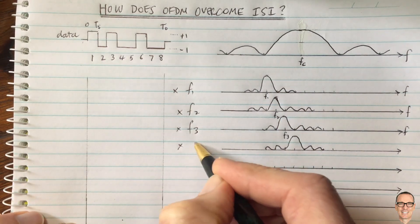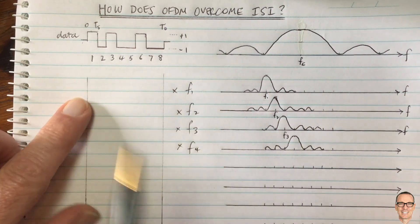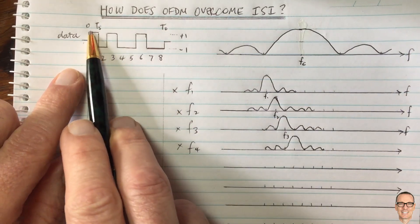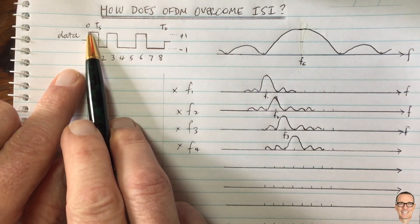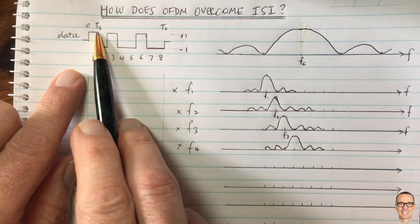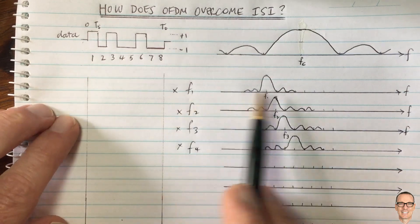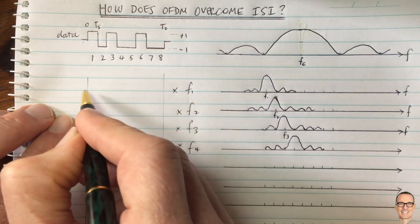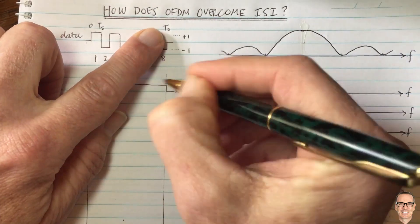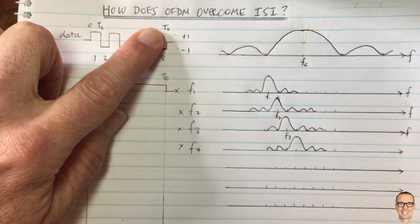And what does that mean? Well, that means in the time domain, we are taking our first data symbol here, which in this case, because it's binary plus and minus ones, we're going to be sending a, in this case, plus one on sub carrier one. So then we have a waveform here, which is plus one for the entire T0 or TO, TOFDM.